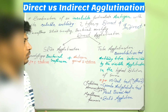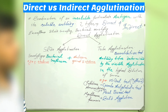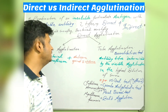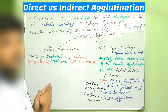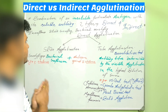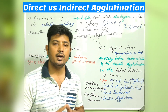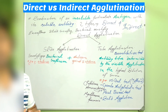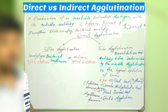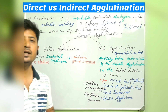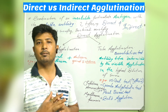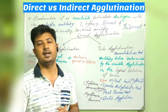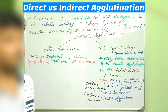In tube agglutination, which is most commonly used for quantitative analysis: slide agglutination tells you the positive or negative nature of the sample, but tube agglutination allows you to determine the titer of the antibody present in the patient's serum.